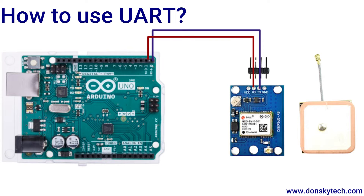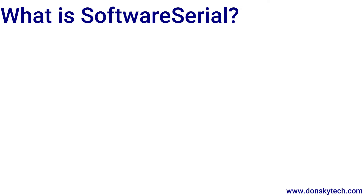For example, if you want to communicate with your GPS module, all you have to do is connect the RX to the TX and the TX to the RX pin of both devices. Then you are able to initiate serial communication between the two devices. So where does software serial come into the picture?